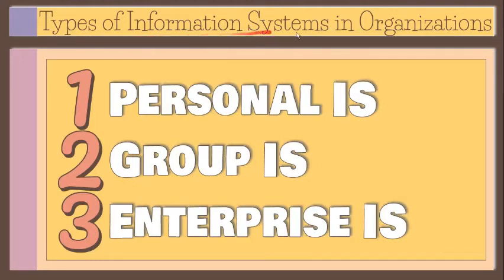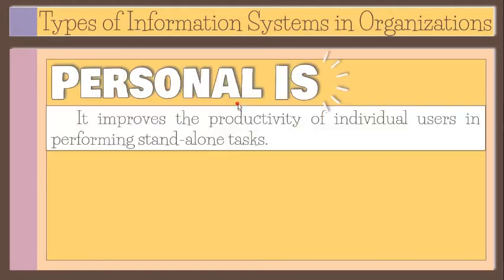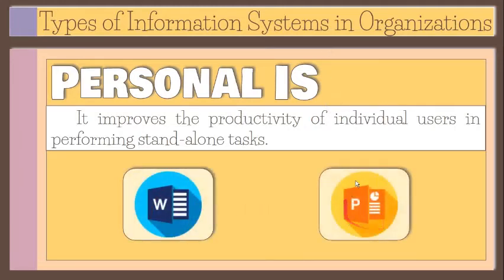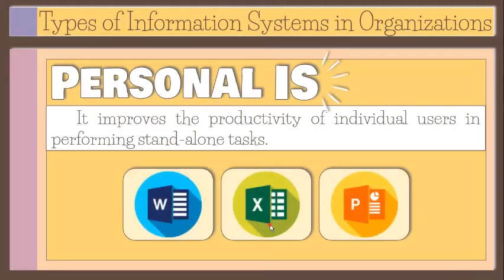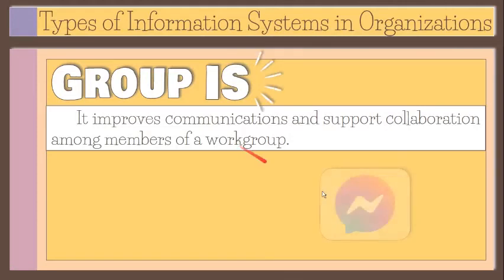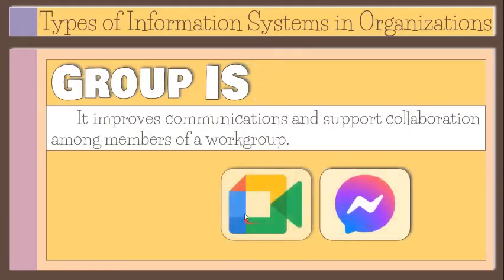There are different types of information systems used in organizations. First is the personal information system, which includes information systems that improve the productivity of individual users in performing standalone tasks. Examples include personal productivity software such as word processing, presentation, and spreadsheet software. Next is the group information system, which includes information systems that improve and support collaboration among members of a work group. Examples include instant messaging, web conferencing software, and email.